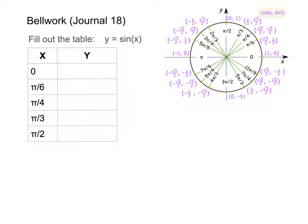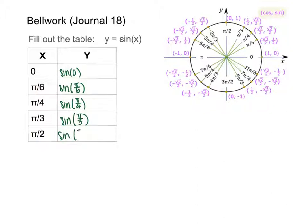For these problems, I'm going to plug in each x value into sine and figure out what that value would be. So I'll plug in 0 first, then pi over 6, sine pi over 4, sine pi over 3, and sine pi over 2. All I'm doing right now is setting it up so I can figure out what my function gives when I plug in my x value. Sine of 0 on the unit circle is right here.